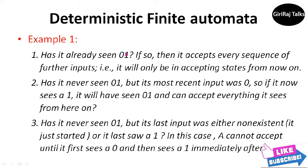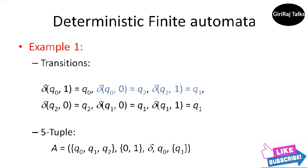To remember this substring 0,1, the automaton follows these three conditions, each represented by a state. Condition 3 is represented by start state q0. If in state q0 we see a 1, we are no closer to seeing 0,1 and must stay in q0 — that is, delta of q0 comma 1 equals q0. However, if we are in state q0 and see a 0, we transition to state q2 representing condition 2 — that is, delta of q0 comma 0 equals q2.